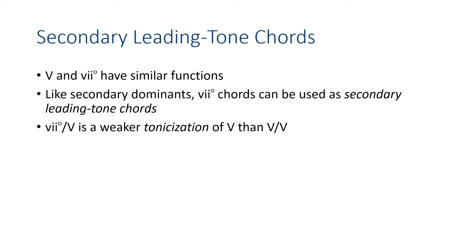Let me give you one quick example. If I'm in C major and I want to tonicize the five chord, which is G-B-D, the five-seven of that G chord is D, F-sharp, A, C. That tonicizes the G chord. Now, if I want to just do a seven of that, it would just be the seven in the key of G, which is F-sharp, A, C. It's actually got a lot of the same notes in it.